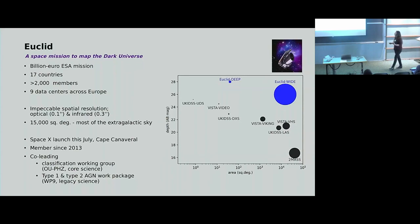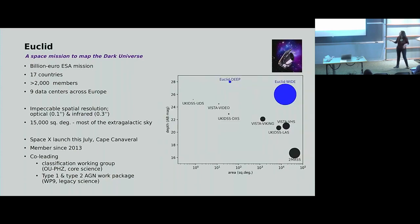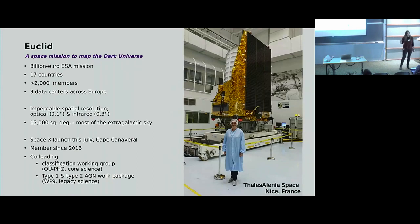This is the footprint of the wide survey. Everything in green is going to be observed in the optical and near infrared with HST resolution, and this is 15,000 square degrees, so this is going to be absolutely spectacular. We are more than 2,000 people and counting, 17 countries involved in this mission, and it's absolutely spectacular and as scary as it sounds.